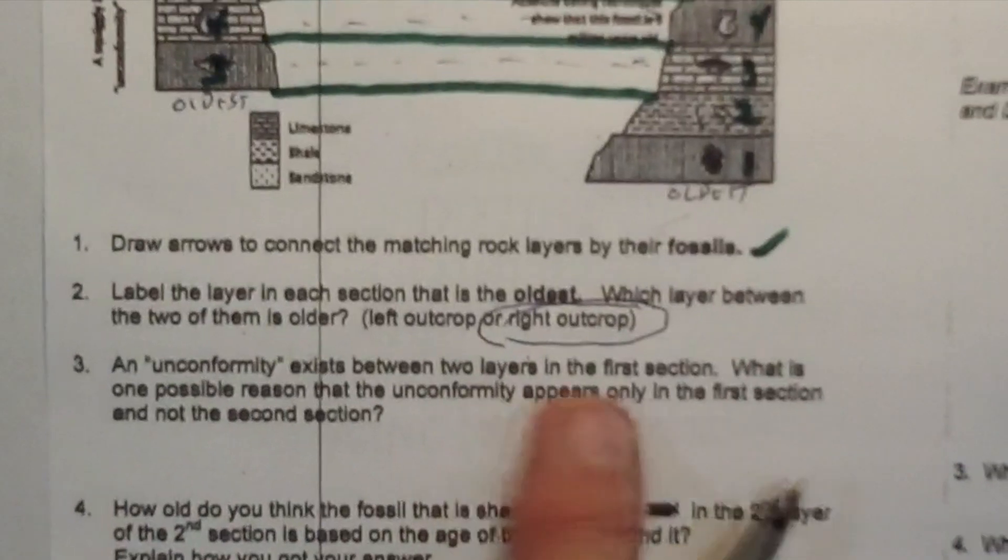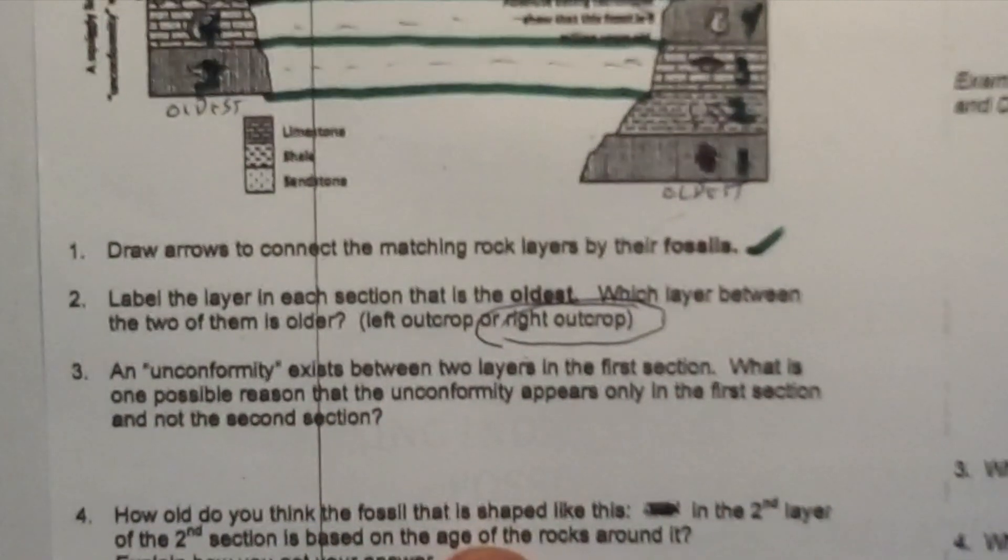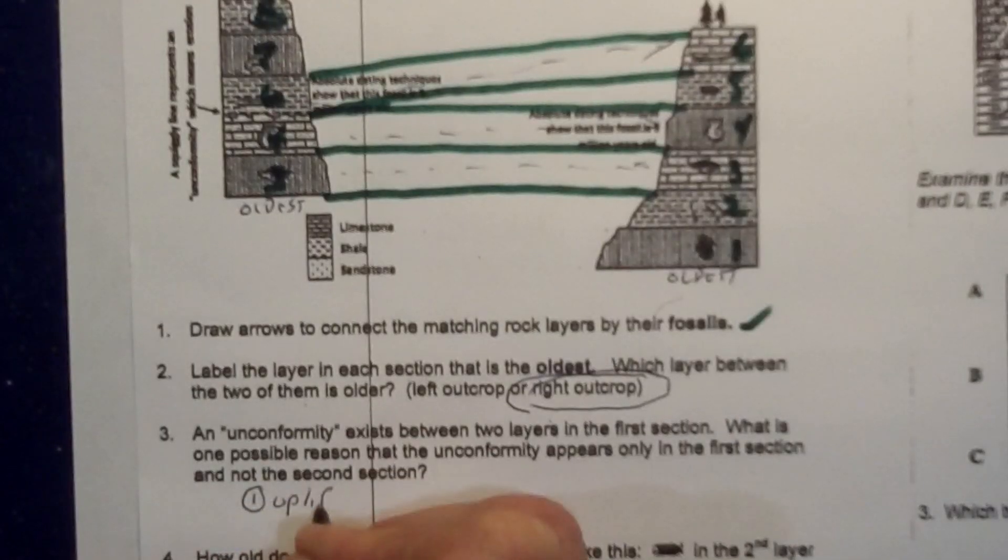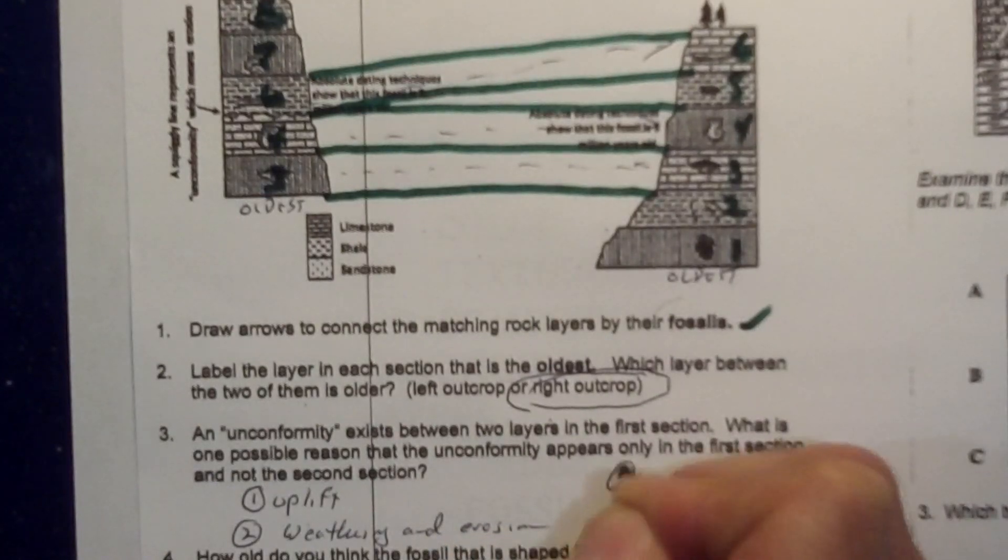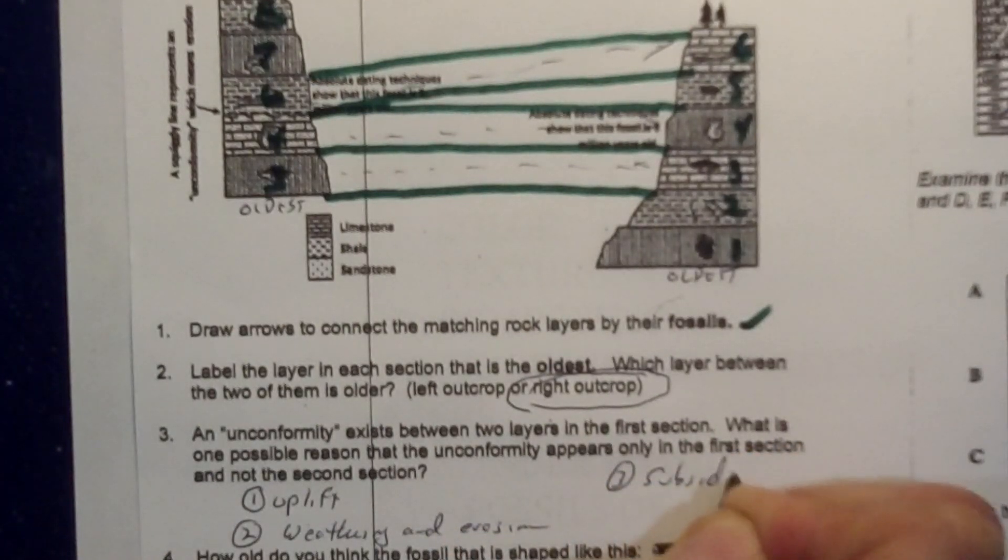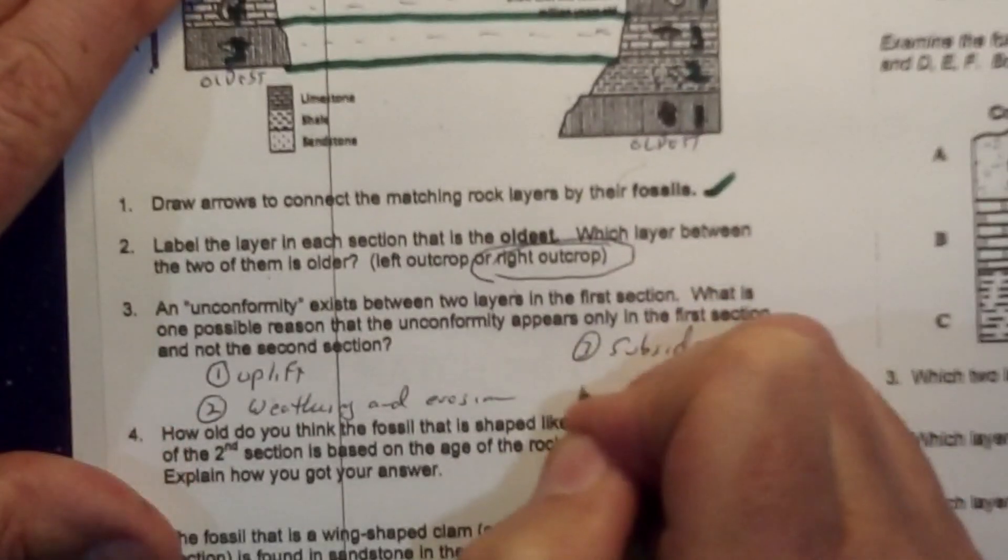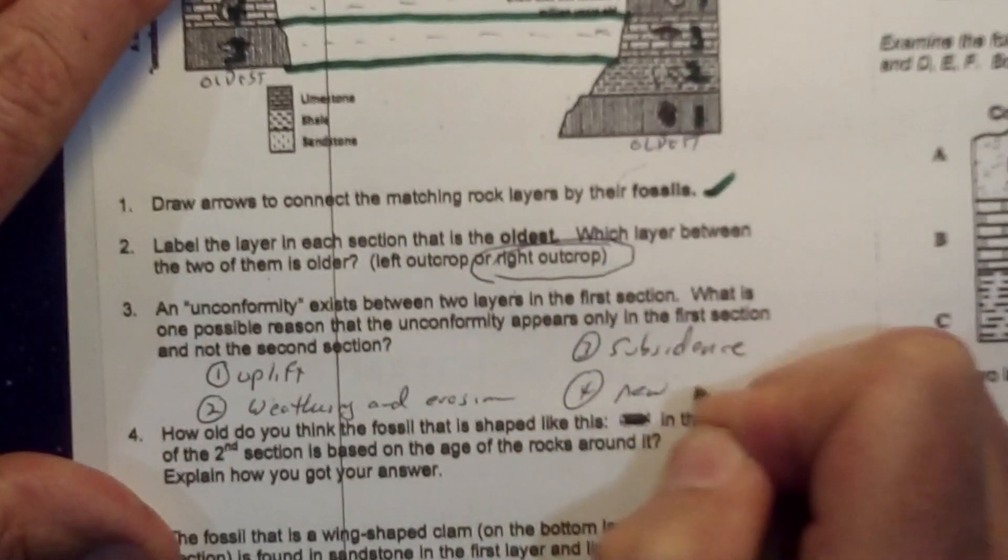An unconformity exists between the two layers. What's a possible reason? The unconformity appears only in the first section, not the other. Why here? Because in that first section, we had uplift, we had weathering and erosion, we had subsidence, and then we have number 4, new deposition.